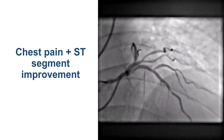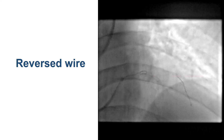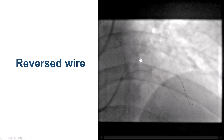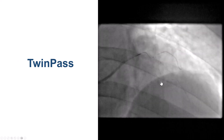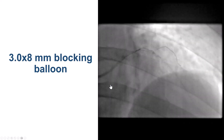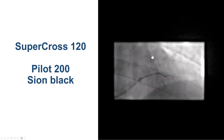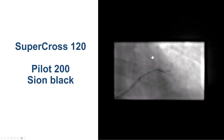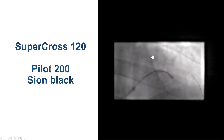The question is what to do now. Ideally, we would try to wire inside the diagonal through the stent struts and then use another stent in a culotte fashion. But several techniques including a reversed wire technique did not work. We used a knuckled wire with and without a dual-lumen microcatheter, a dual-lumen microcatheter alone, and a small blocking balloon just proximal to the diagonal, all without success. We also used an angulated Supercross 120 microcatheter with several wires including polymer-jacketed, PILOT 200, and another Sion Black, but were unable to advance a guidewire into the diagonal branch.